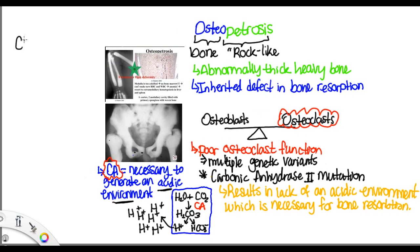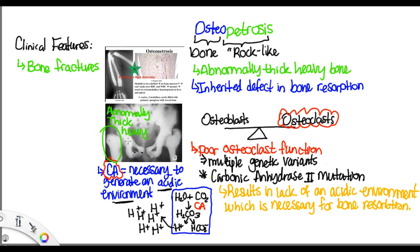The clinical features of osteopetrosis include bone fractures. Although the bone is thick, it is very weak and therefore more prone to fractures. This is because there is no proper balance between osteoclasts and osteoblasts — and in order to make strong bones, you need that balance.